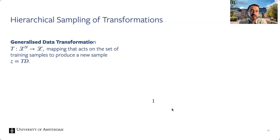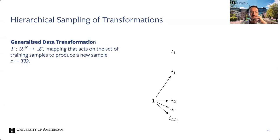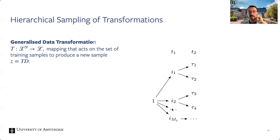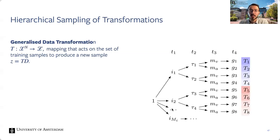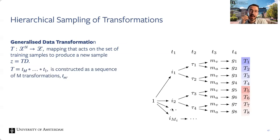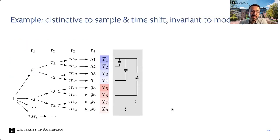A generalized data transformation is a mapping acting on a set of training samples to produce a new sample. We use a hierarchical sampling scheme to generate general data transformations for a batch. First we sample M_i transformations that slice the dataset to yield M_i data points — in this case videos. For each sampled data point we can sample two starting times in the video. For each index and starting point we project the video into its audio and visual components. Lastly we apply spatial and audio augmentations such as random cropping or random volume increases.